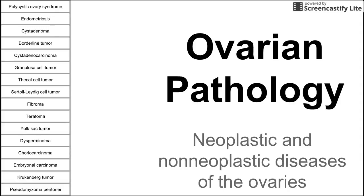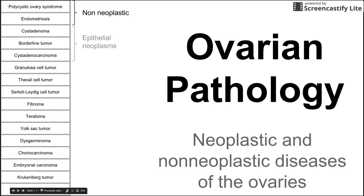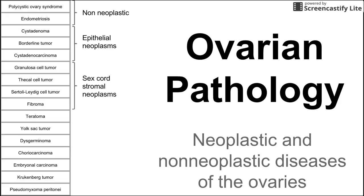This is a video on ovarian pathology. We're going to be talking about neoplastic and non-neoplastic diseases of the ovaries, and we have quite a list of diseases to go through. These diseases can be broken down into categories. The first two at the top are non-neoplastic. The next three are epithelial neoplasms, neoplasms of the surface epithelium of the ovaries. The next four are sex cord stromal neoplasms. The next five are germ cell neoplasms, and the last two are malignancies that involve spread of cancer to or from the ovaries.